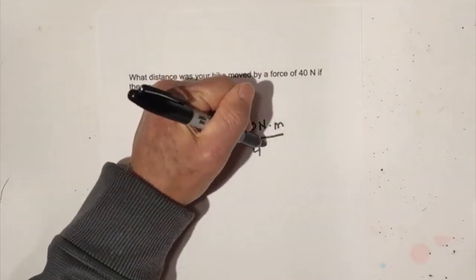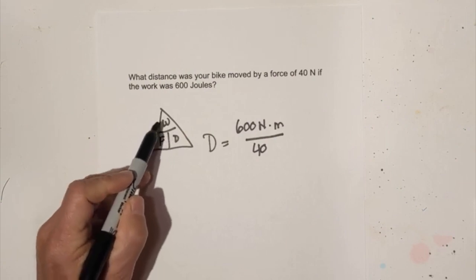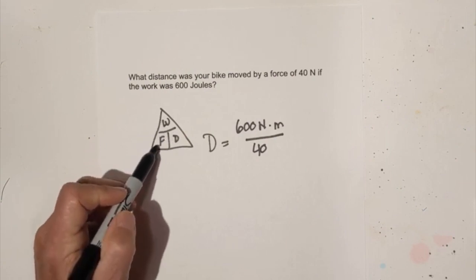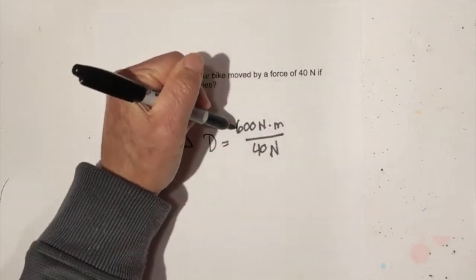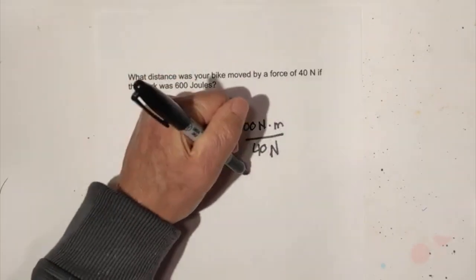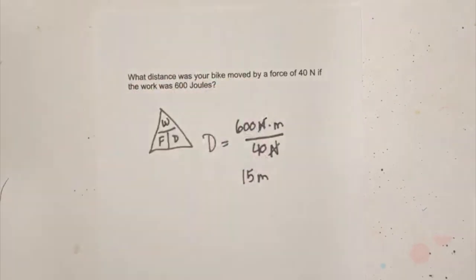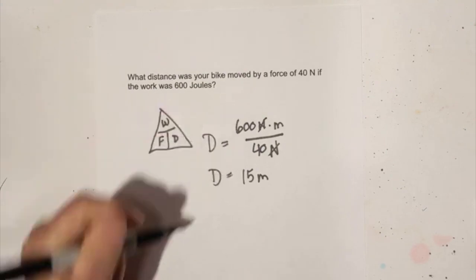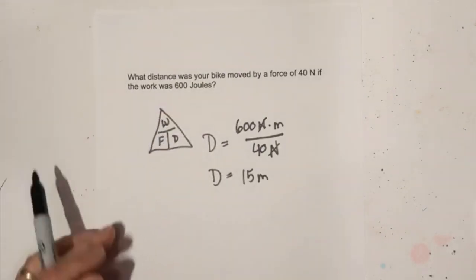Now we're going to place it over a force because remember we're looking for distance so it's work divided by force and force is in newtons. Watch this, 600 divided by 40 is 15, newtons cancel and you're left with meters so it's a distance of 15 meters.